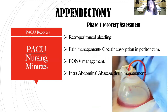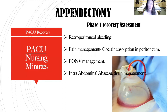In Phase 1 recovery, you're watching for retroperitoneal bleeding — immediately look at the abdomen, palpate it, make sure it's soft, not firm or rigid, and the patient is not having flank pain or severe abdominal pain. Also watch the JP drain if they have one — make sure it's not filling up too fast and not clotting off.